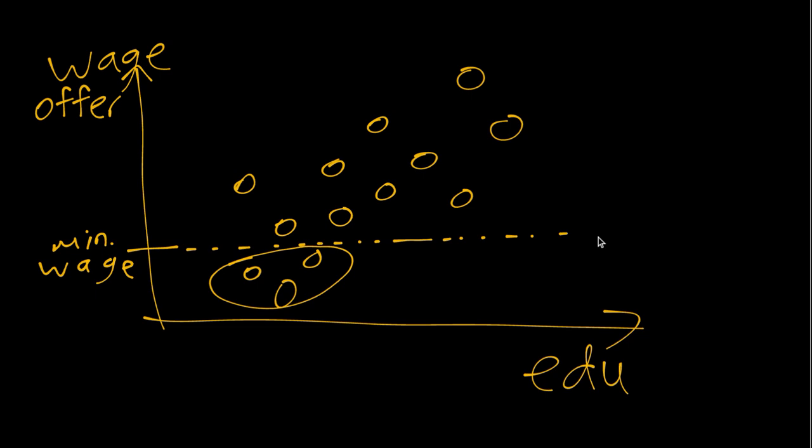Or at least we'll maybe be able to see their education level, but we will not be able to see the wage offer, the Y variable. And so there are other people whom we will observe both their education and their wage.